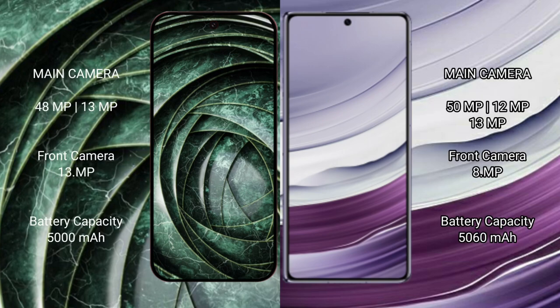Google Pixel 9a has a rear triple camera setup: 48MP and 13MP, with a front camera of 39MP.